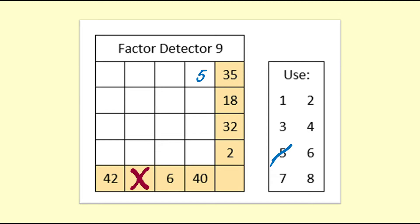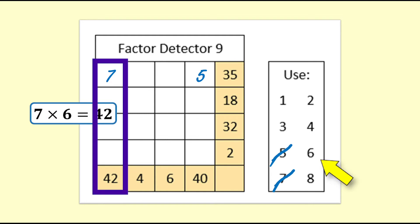7 does not go into 4 or 6, but it does go into 42. So we put the 7 in the column with 42 at the bottom and cross off the 7. 7 times 6 equals 42, so we can put 6 in the 42 column.